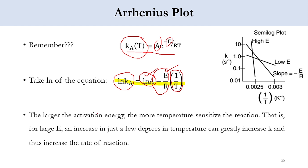The larger the activation energy, the more temperature sensitive will be the reaction. For a system with a large value of activation energy, an increase of even a few degrees in temperature can greatly increase the value of the rate constant. Since the rate of reaction is directly proportional to both the concentration of reactants and the rate constant, the rate constant can be increased by increasing the temperature.